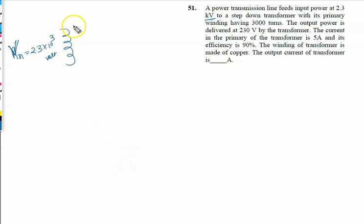To step down transformer, the number of turns in secondary is less. Its primary winding has 3000 turns, the number of turns in the primary is 3000.